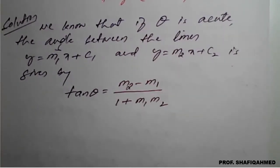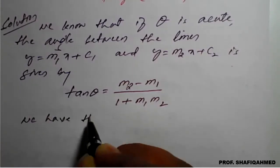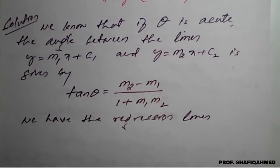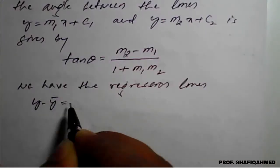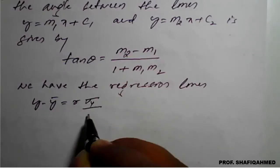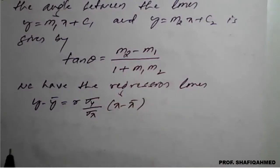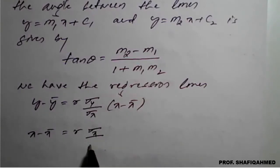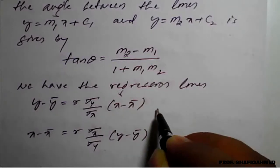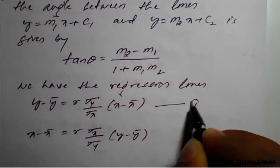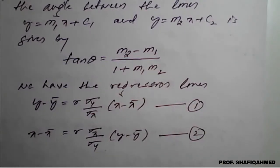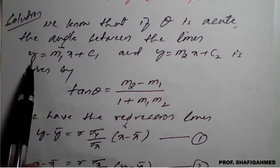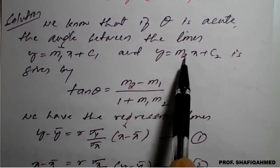We have the regression line of y on x: y − ȳ = r·(σy/σx)·(x − x̄), and the regression line of x on y: x − x̄ = r·(σx/σy)·(y − ȳ). We label these as equation 1 and equation 2. These are the two lines in the form y = m1·x + c1 and y = m2·x + c2.